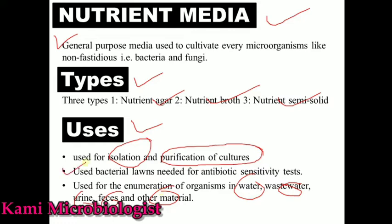Second, we can use nutrient agar for antibiotic profiling. Using nutrient media, we can easily make a bacterial lawn. A bacterial lawn means when you add 100 microliters of bacterial suspension onto nutrient agar and spread it using a glass rod or culture swab, then antibiotics are placed over it, and after 24 hours you check the sensitivity and resistance profile. This is also possible using Mueller-Hinton agar, which we will discuss later.